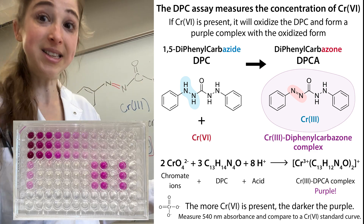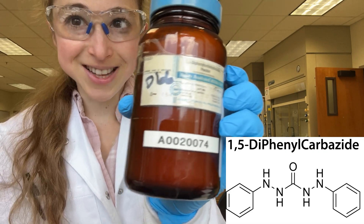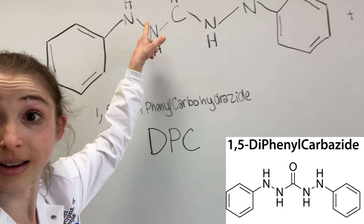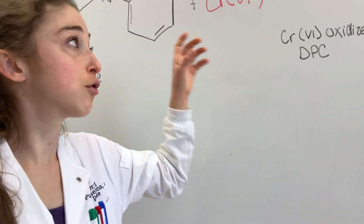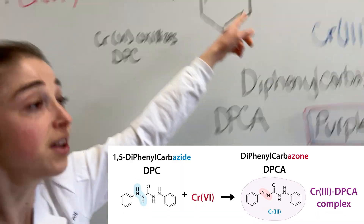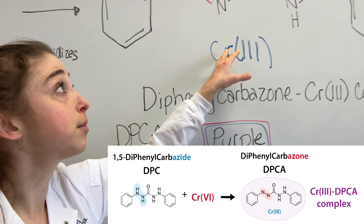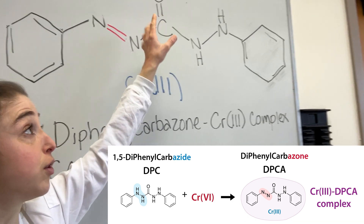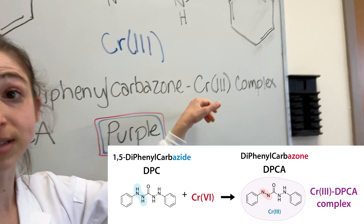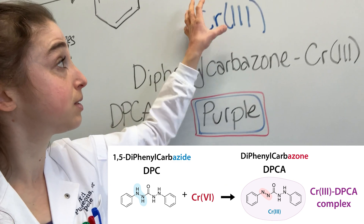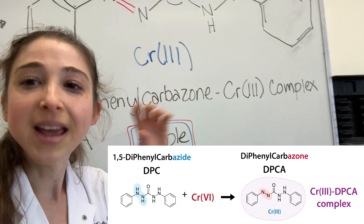In this DPC assay, we take DPC — 1,5-diphenylcarbohydrazide. Note this group here. If we mix it with chromium-6, the chromium-6 is going to oxidize it. You can see we now have a double bond here, and we're left with chromium-3. That chromium-3 is then going to react with the oxidized DPC, which is DPCA — diphenylcarbazone. The complex of chromium-3 with diphenylcarbazone looks purple.